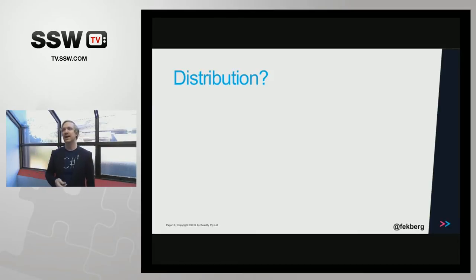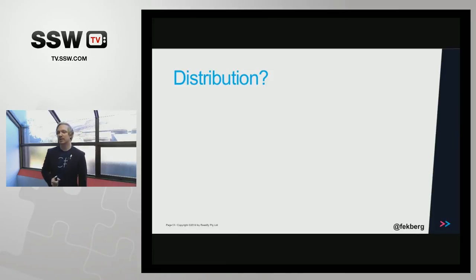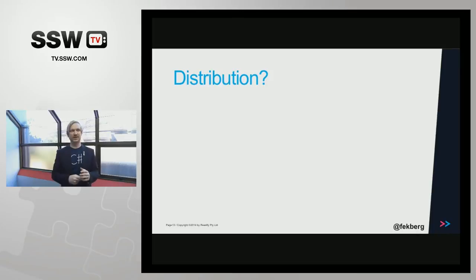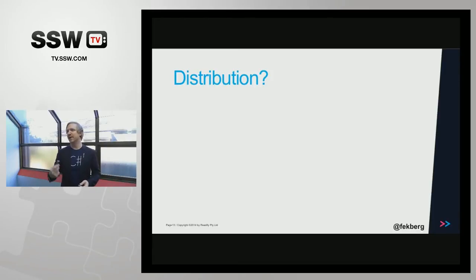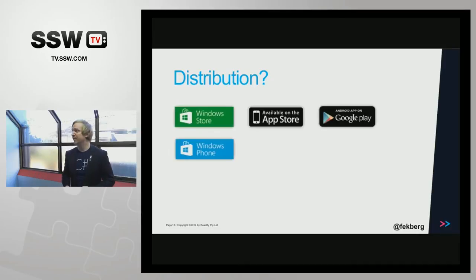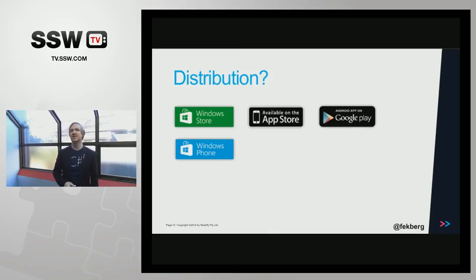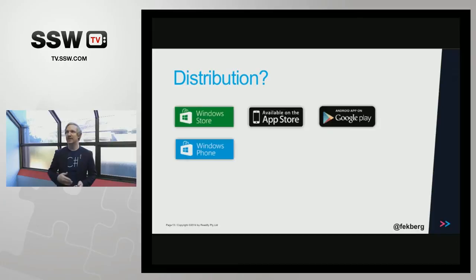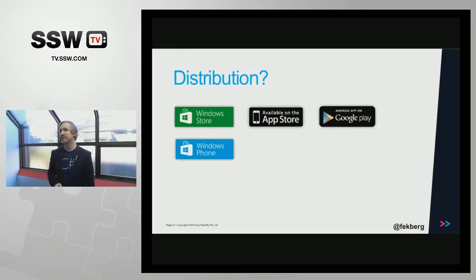Now that we're convinced Xamarin is the right way — it's going to cut down costs and be easier to maintain — we want to distribute the application. Since this compiles down to native executables, you can just log into iTunes Connect and upload your binary directly without going through Xcode. The same goes for Android — log into Google Play and upload your binary. You do the same for Windows Store and Windows Phone applications. We even set up beta testers using TestFlight, automatically publishing applications and notifying users when there's a new update.